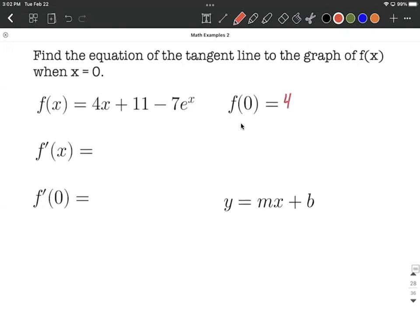So we have 4(0) + 11 - 7e^0. The 4 times zero becomes zero, so we have 11 - 7e^0.